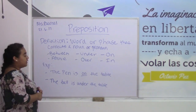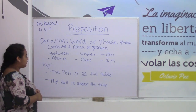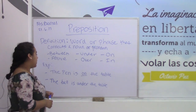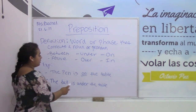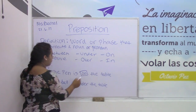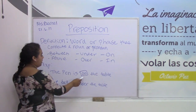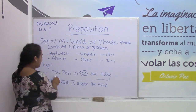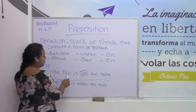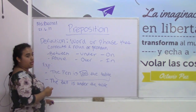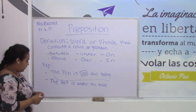Some example sentences would be like the pen is on the table. You can see how 'on' connects the whole sentence — it tells you where the pen is, which is on the table.